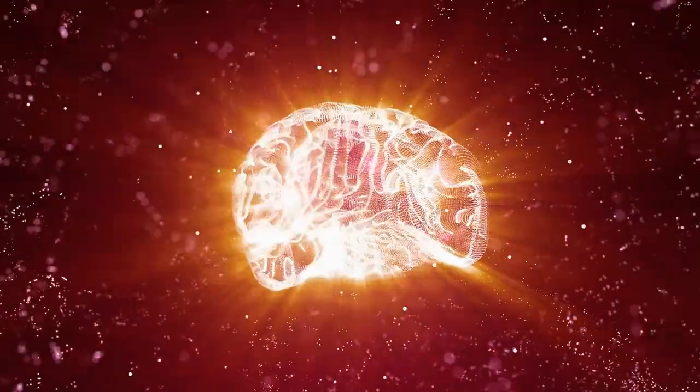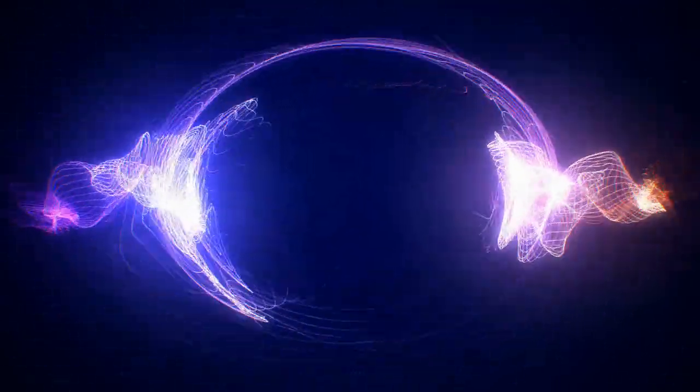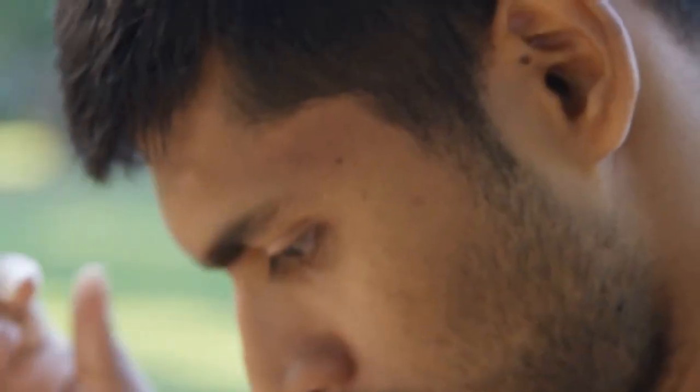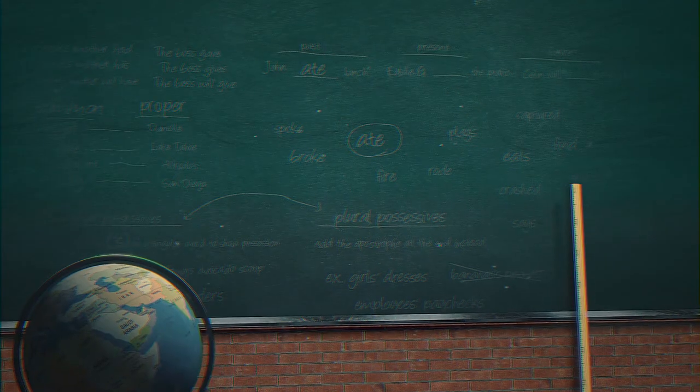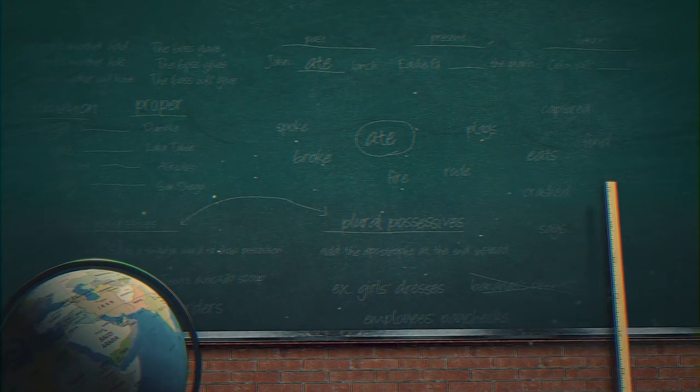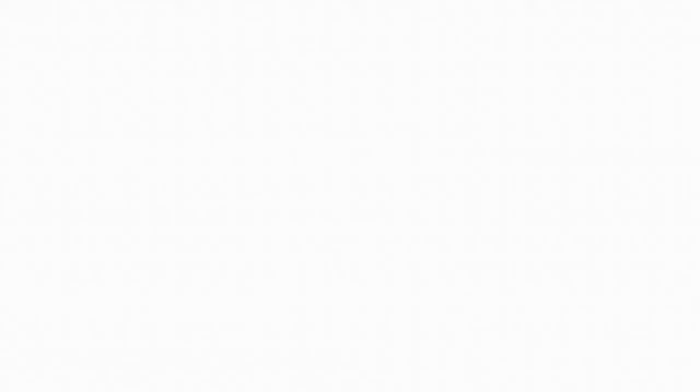A Boltzmann Brain is defined as a fully formed brain, complete with the memories of a full human life in our universe that arises due to extremely rare random fluctuations out of a state of thermodynamic equilibrium. You probably didn't understand what I just said, so let me simplify it for you. Here's my explanation of a Boltzmann Brain, in as little time as possible. To understand the Boltzmann Brain, we first need to understand three concepts.